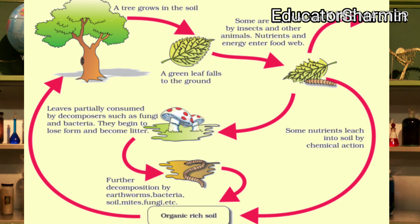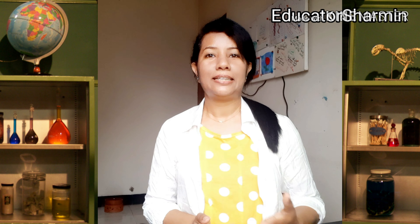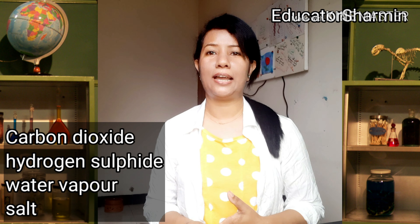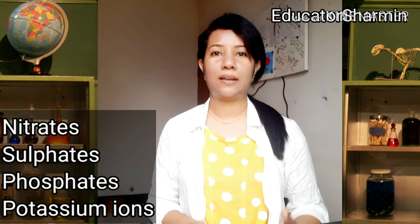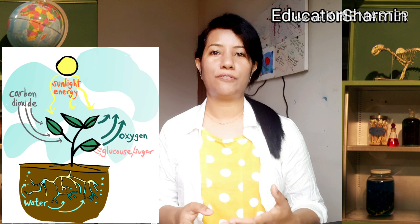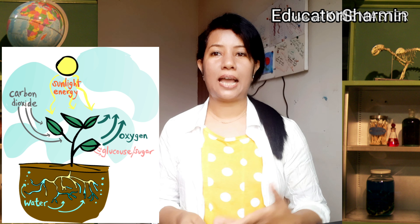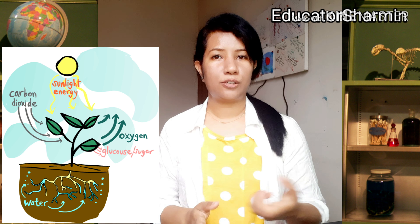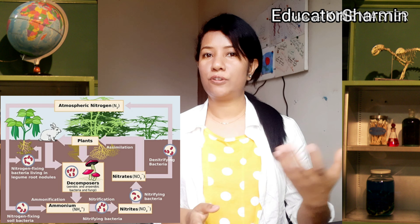They absorb only a small amount of energy and nutrients, releasing the rest into the surrounding soil, air, and water, while energy is lost as heat. Inorganic compounds released during decay include gases like carbon dioxide, hydrogen sulfide, and water vapor, and salts like nitrates, potassium, phosphate, and sulfate ions. These are reused by green plants during photosynthesis and other synthetic processes.